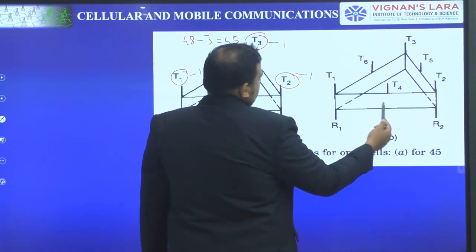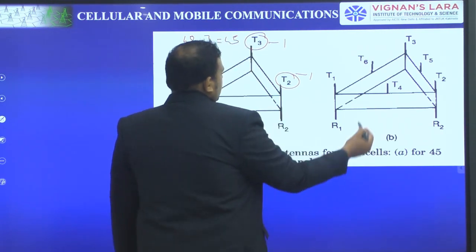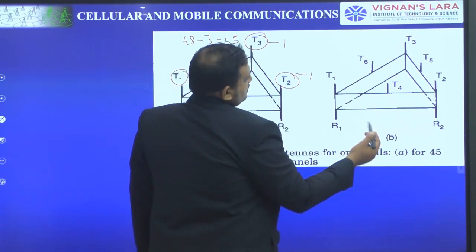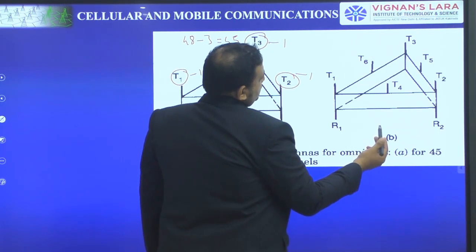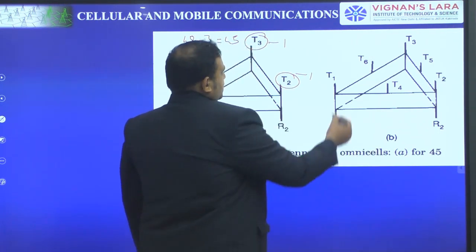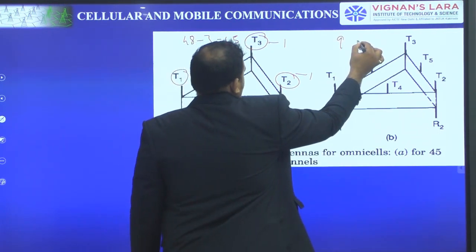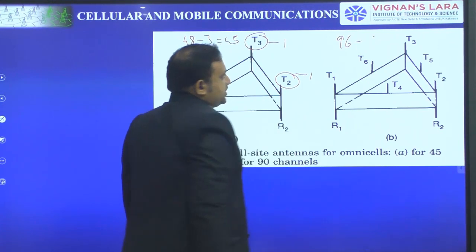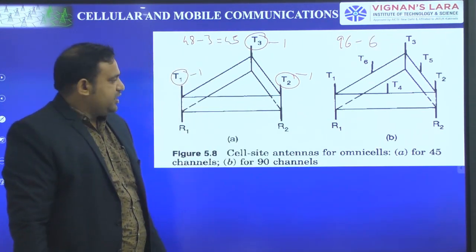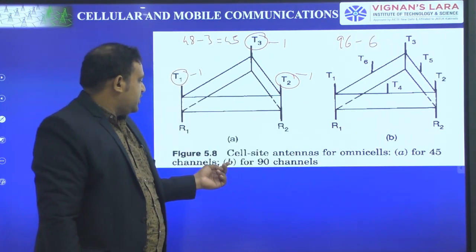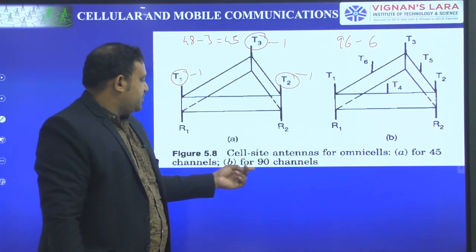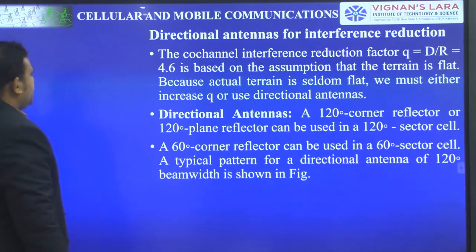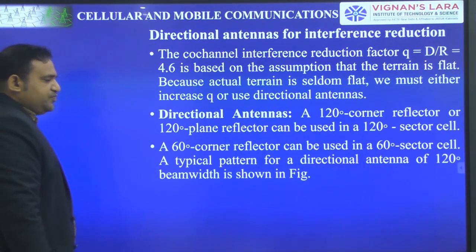In figure B, there are 6 transmitting antennas. 16 into 6 gives 96, and minusing 6 setup channels gives 90. So 90 voice channels — figure B represents the configuration for 90 channels. This is about omnidirectional antennas.